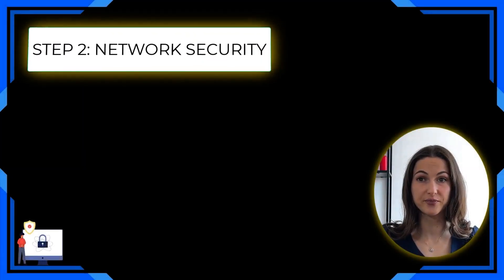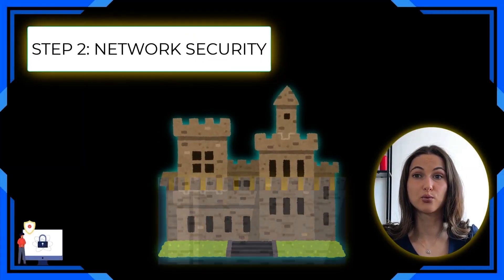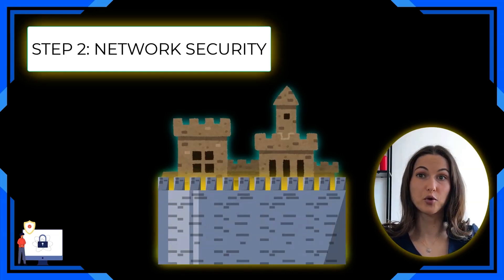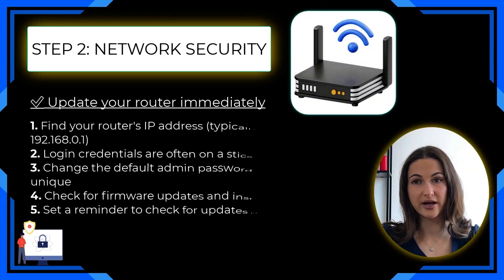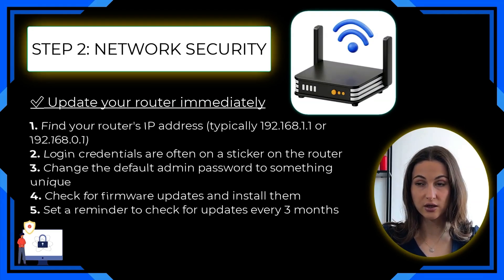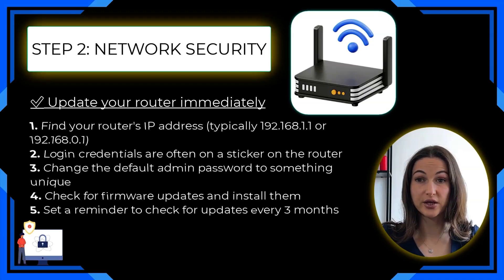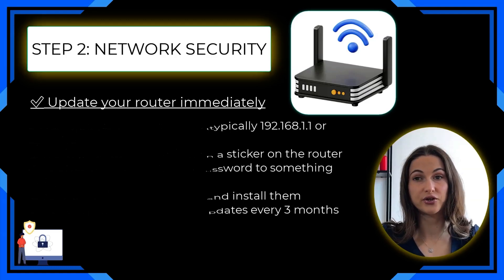Step number two: network security. Your home network is your castle's outer wall. Here's how to secure it properly. Update your router immediately — find your router's IP address, it's on the back of the router. Login credentials are often on a sticker on the back as well. Change the default admin password to something unique, check for firmware updates and install them, and set a reminder to check for updates every three months.